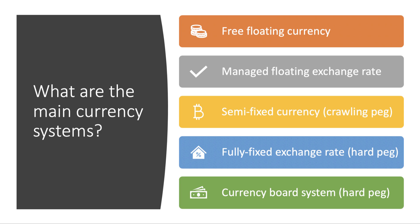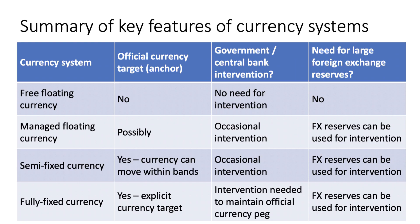The main currency systems are: free floating, managed floating, semi-fixed currency sometimes known as a crawling peg, a fully fixed exchange rate otherwise known as a hard peg, and also a currency board system — only a few countries use this, which is a very hard currency peg. This slide, which you may want to take a screenshot of, covers the key features of each currency system.